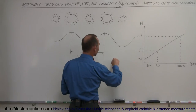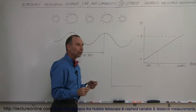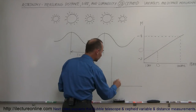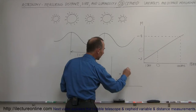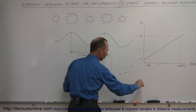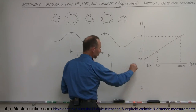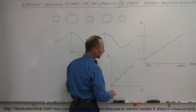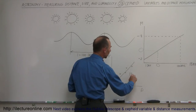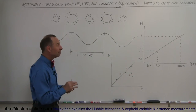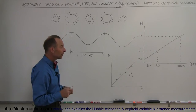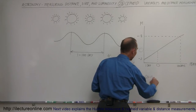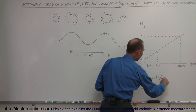We measure a whole bunch of Cepheid variables, find the distances to the galaxies they're in, and note their recessional velocities. On the vertical axis we have velocity, on the horizontal axis we have distance. We connect those points with the best-fit line, measure the slope of that line, and that slope equals the Hubble constant. Doing that, the value we obtained for the Hubble constant ended up being somewhere between 60 to 80 kilometers per second per megaparsec.